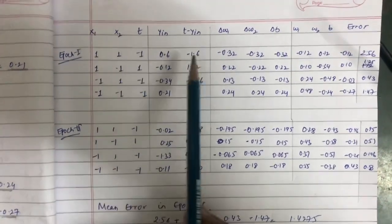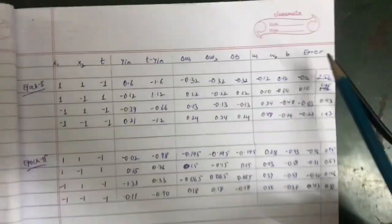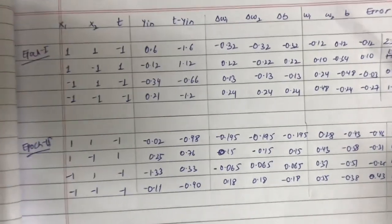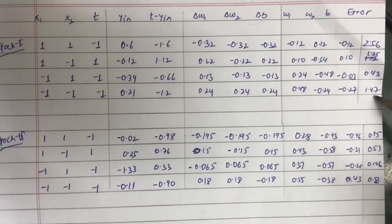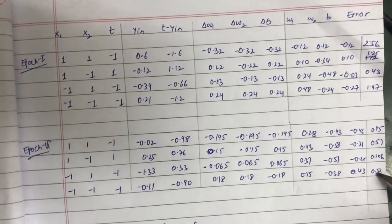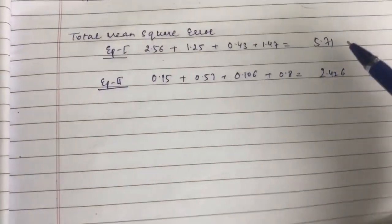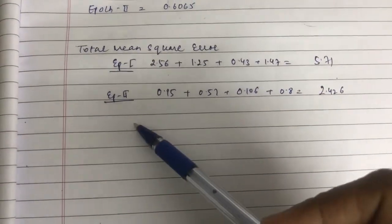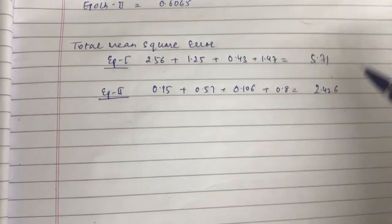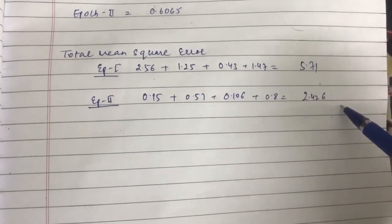The final table shows x1, x2, t, y_in, t−y_in, delta_w1, delta_w2, delta_b, w1, w2, b, and error values for both epochs. The error values in Epoch 1 are 2.56, 1.25, 0.43, and 1.47. In Epoch 2 they are 0.95, 0.57, 0.106, and 0.8. Total mean square error for Epoch 1 is 5.71, while for Epoch 2 it is 2.426 — showing the error has been reduced. This is basically the functionality of the ADALINE algorithm.